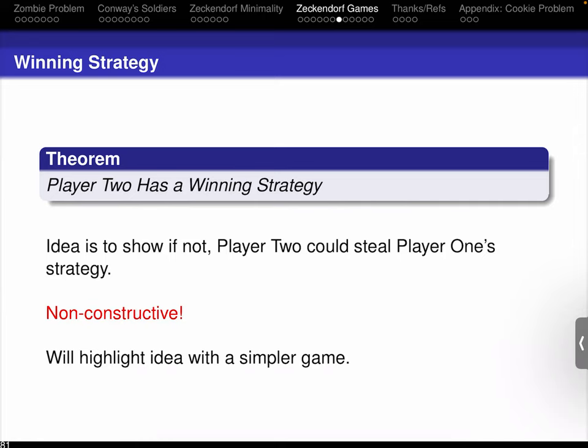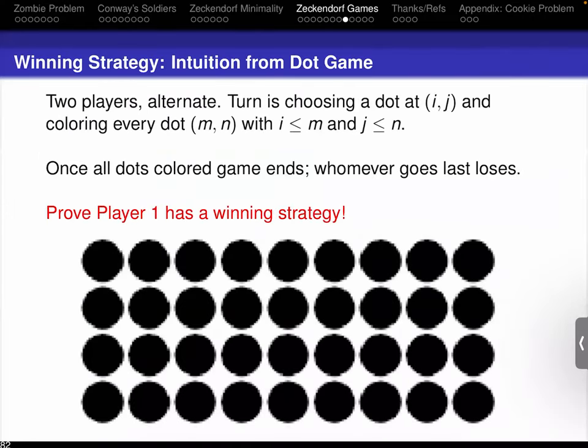I'm going to show you this idea with a simple problem first — the game is called Chomp. You start off with a rectangle of dots and whoever moves last loses. If you choose a dot, you remove everything from that dot above and to the right. Clearly, if player one wants to lose, they just go in the lower left corner. It turns out player one has a winning strategy. Here's the proof: if player one has the winning strategy, player one plays it. If not, player two has the winning strategy.